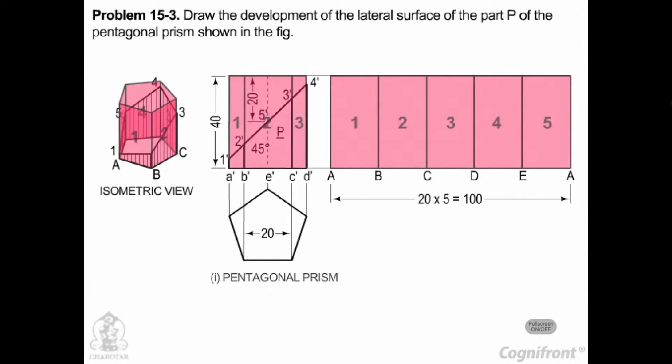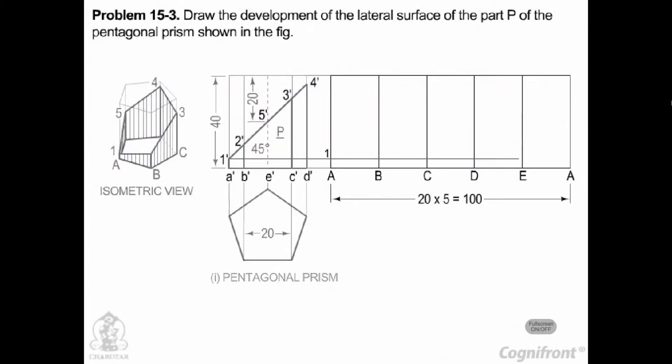It is made up of 5 equal rectangles. Draw horizontal lines through points 1 dash, 2 dash, etc.